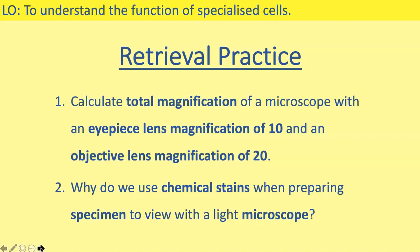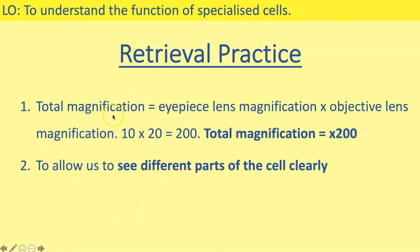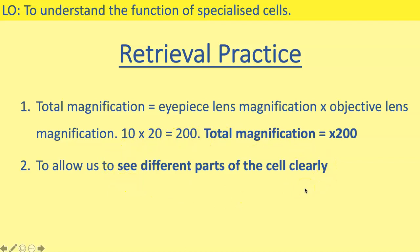Moving on to the answers. For question one, the calculation is eyepiece lens magnification multiplied by the objective lens magnification. Using the question values — eyepiece lens of 10 and objective lens of 20 — the calculation is 10 times 20, which gives us 200. So the total magnification of that microscope would be 200. For question two, we use a chemical stain when preparing a specimen to view under a light microscope to allow us to see the different parts of the cell clearly — we stain them so they stand out more.